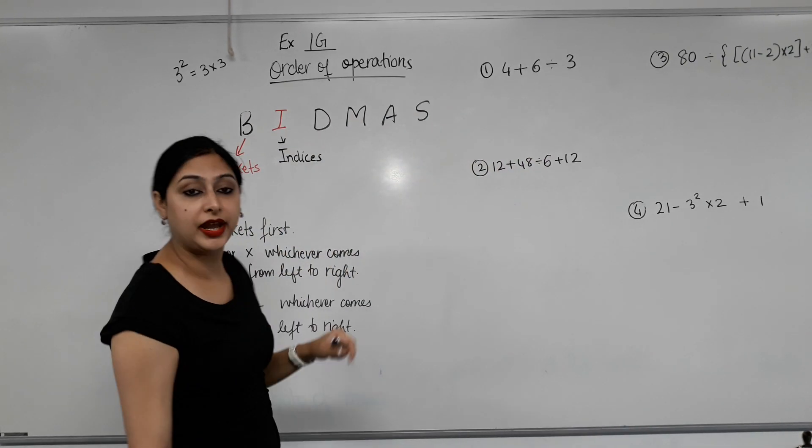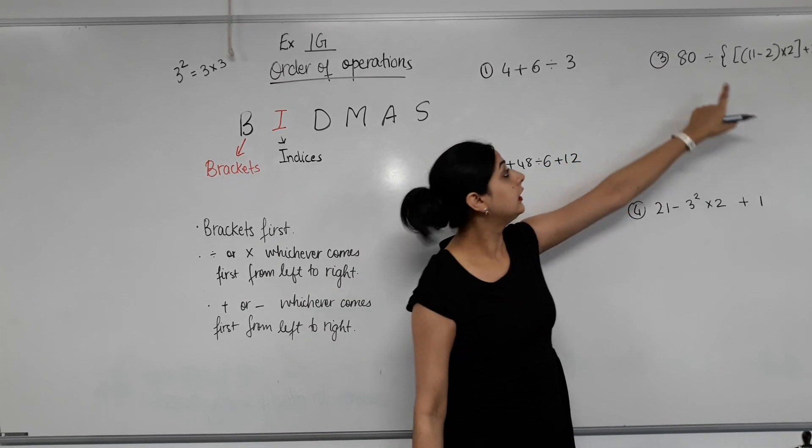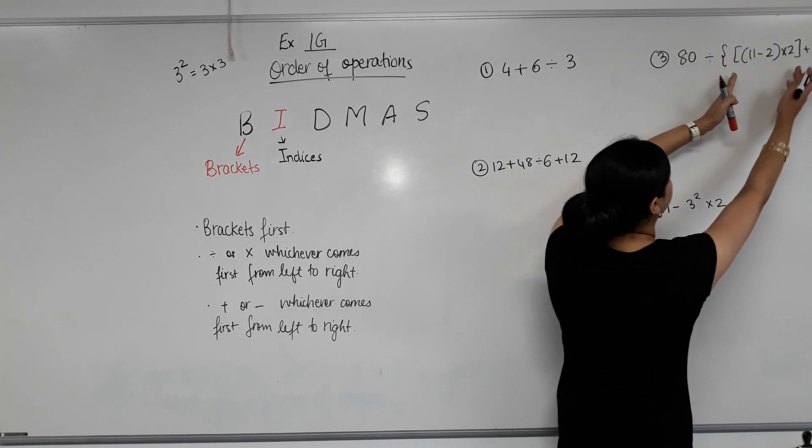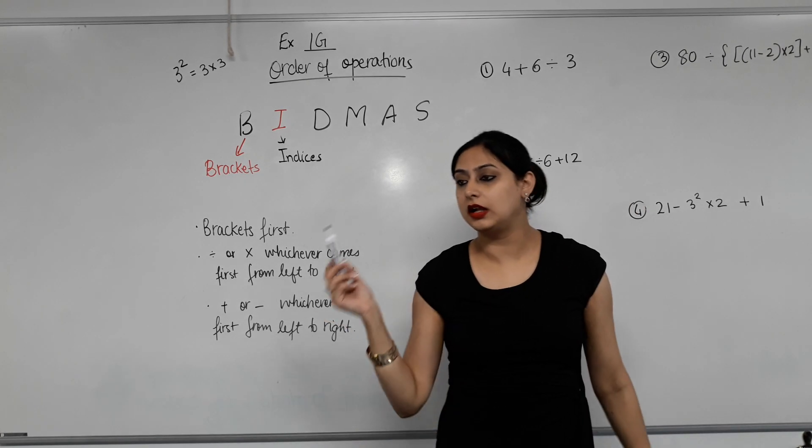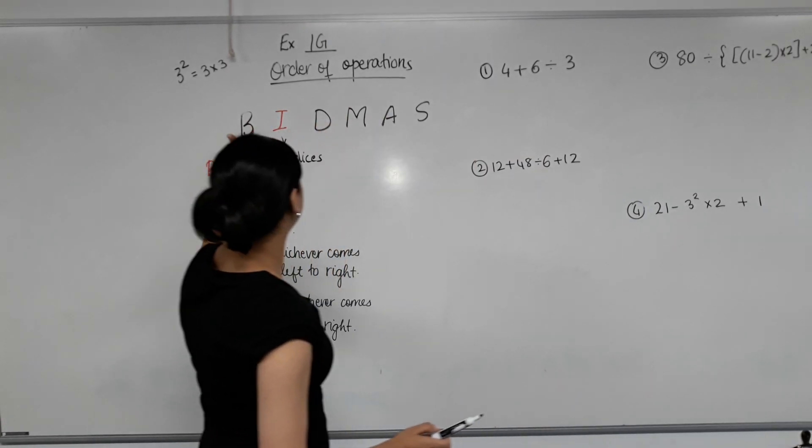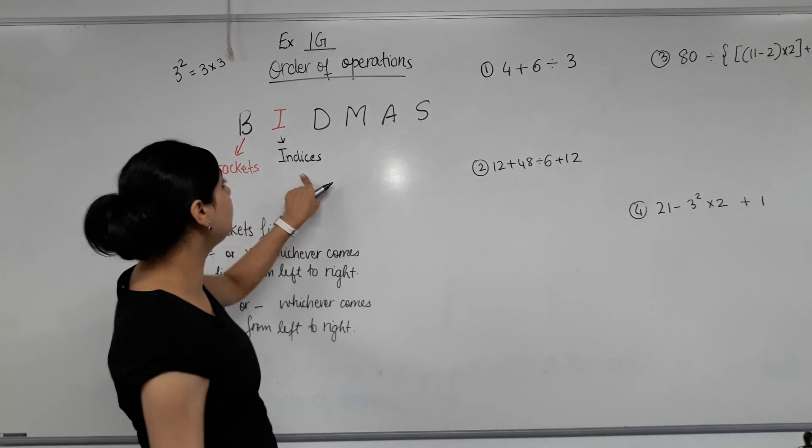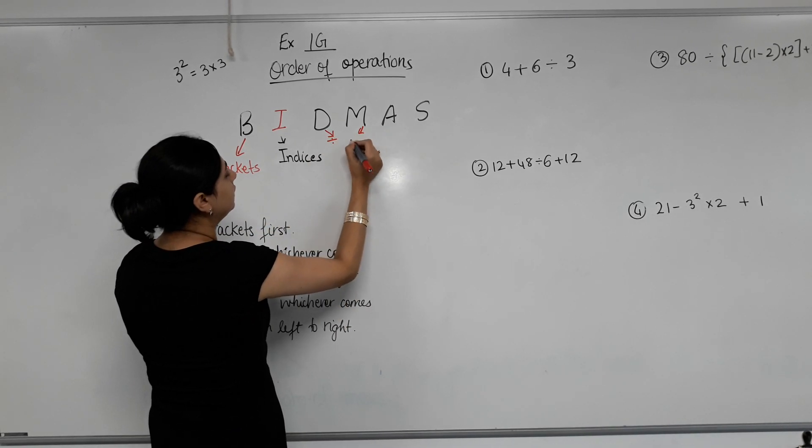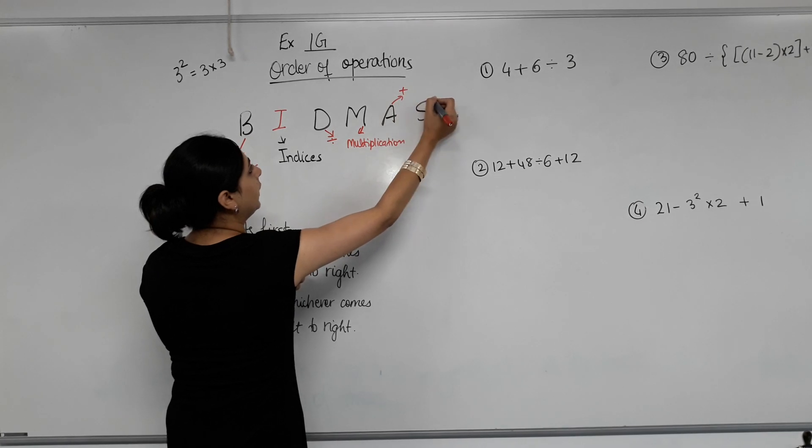So indices are when we have this little number on top, and it actually means the number of times we have to multiply this number by itself. So the first thing we do is brackets. What if we have more than one set of brackets? Which one do we do first? The innermost bracket. Can you see 11 minus 2? See, it's the innermost, then we have the square brackets, then we have those curly wiggly brackets. So the innermost brackets are dealt with first. So the first thing we do is brackets, then we do any indices because we don't need to know about any other functions in year 7. And then D stands for? Divide. M stands for? Multiplication. Multiplication. A? Addition. And S? Subtraction. Well done.